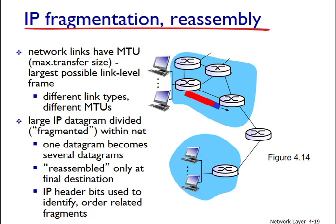When an IP datagram is created, the sending host stamps the datagram with an identification number as well as a source and destination address. Typically, the sending host increments the identification number for each datagram it sends. When a router needs to fragment a datagram, each resulting fragment is stamped with the source address, destination address, and the identification number of the original datagram. When the destination receives datagrams with the same identification number, it can examine those numbers to determine which datagrams are fragments of the larger original datagram.